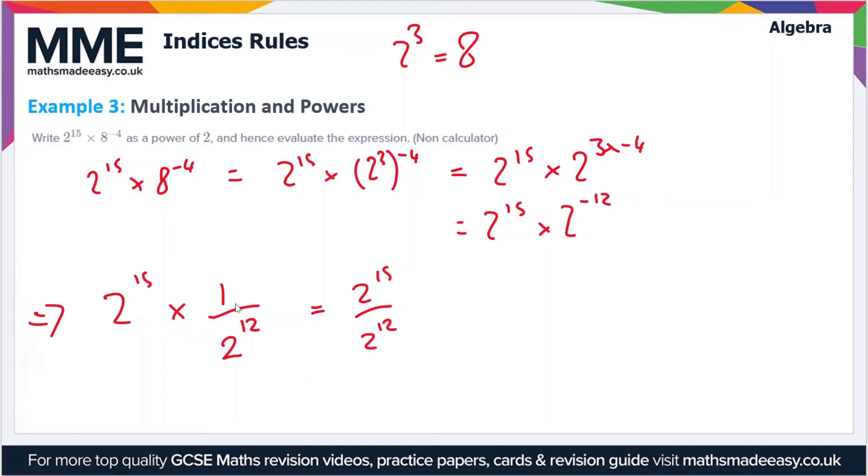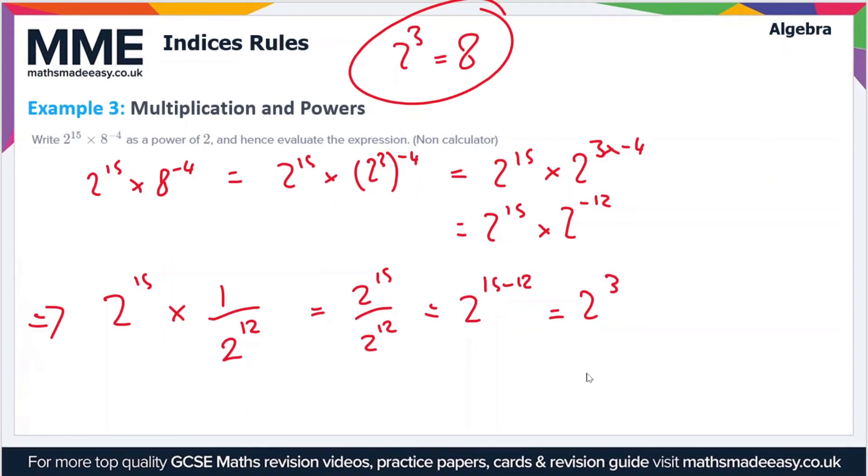So this is equal to 2^15 divided by 2^12, which becomes 2^(15-12), which is 2³. And as we said before, 2³ is 8.